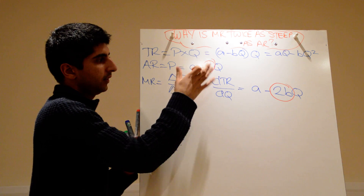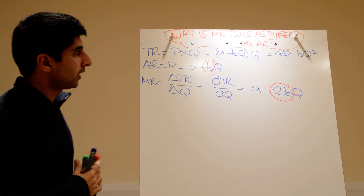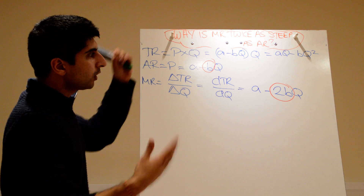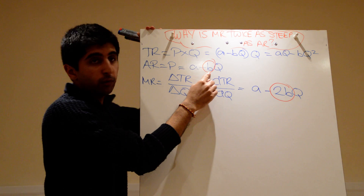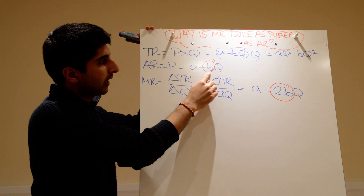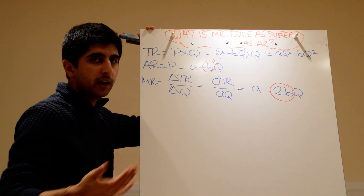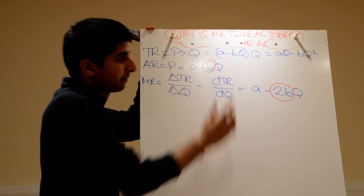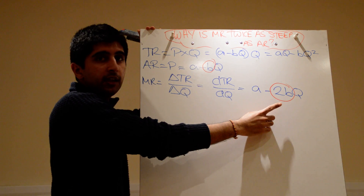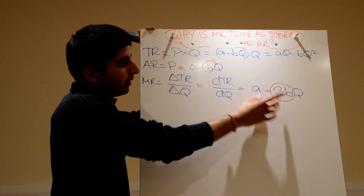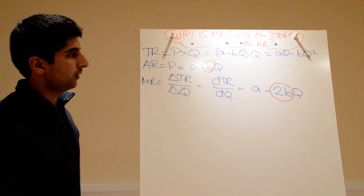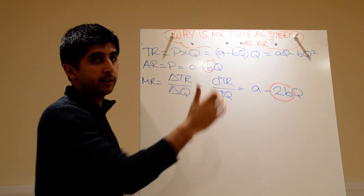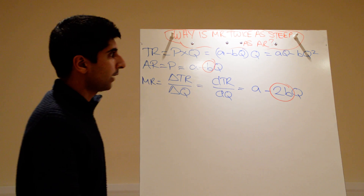Now look carefully. This is our marginal revenue equation and this is our average revenue — it tells us the line of average revenue. We know average revenue just takes the form of a simple demand curve. But look at the slope: the coefficient of q tells us the gradient of the line. It's minus b for average revenue, but for marginal revenue it's minus 2b — so twice as steep as the average revenue curve. That's one understanding of why the MR curve is twice as steep as AR, using calculus.